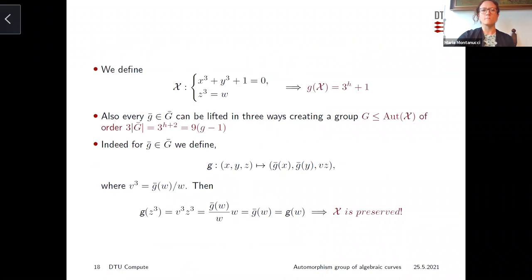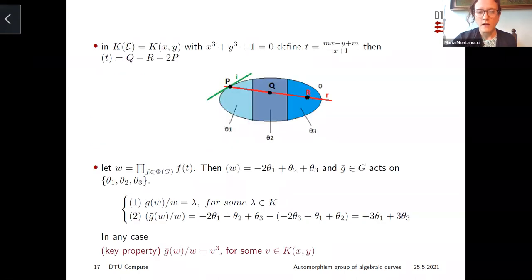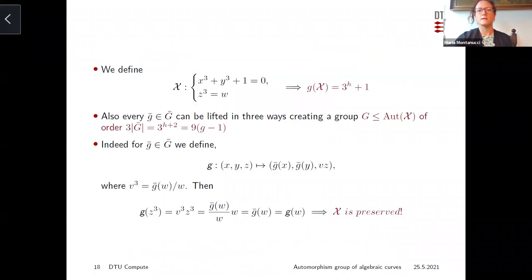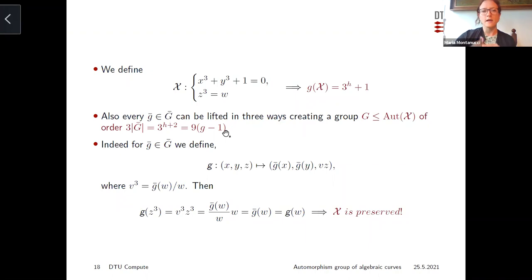This is nice because the extremal curve is given by the Kummer extension z^3 = w induced by w. This is a Kummer extension because the divisor of w has simple zeros and poles with multiplicity two, so these points are all totally ramified — this is where ramification occurs. We can compute the genus of this curve, which is the right one: 3^{h+1}. But actually, we can also use this curve to construct a group of order 9(g-1), lifting every element from Ḡ in exactly three ways.